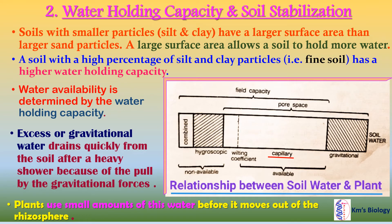Soils with smaller particles — that means silt and clay — have a larger surface area than larger sand particles. A large surface area allows a soil to hold more water. A soil with a high percentage of silt and clay particles, that means fine soil, has a higher water holding capacity. Excess or gravitational water drains quickly from the soil after a heavy shower due to gravitational forces. Plants use small amounts of this gravitational water before it moves out of the rhizosphere. Here is a diagram showing the relationship between soil water and plant.